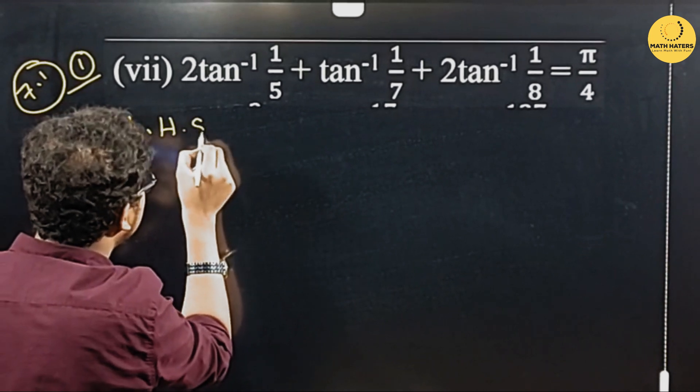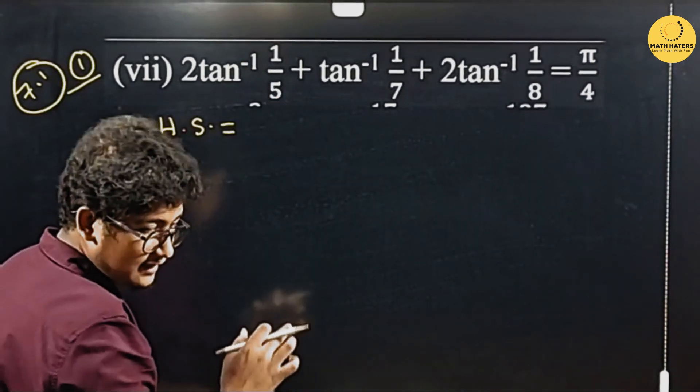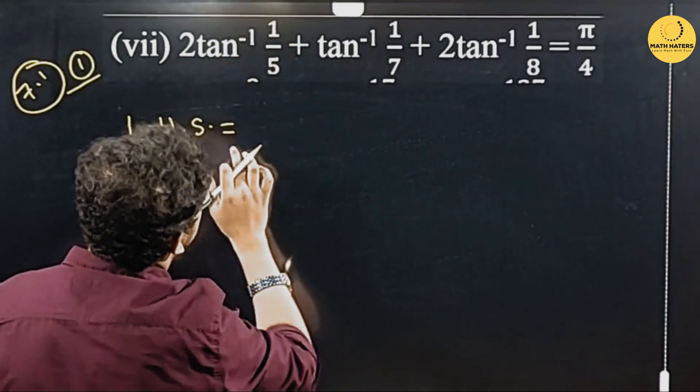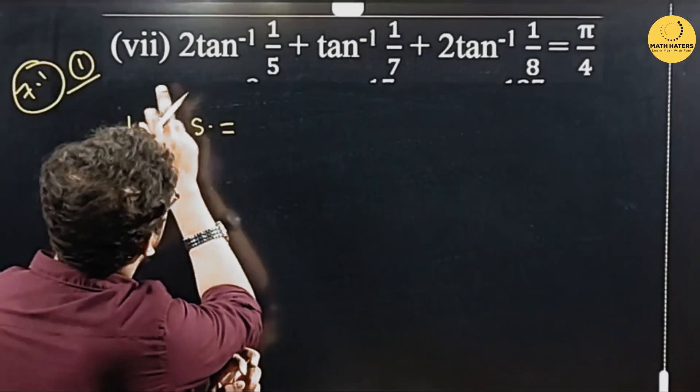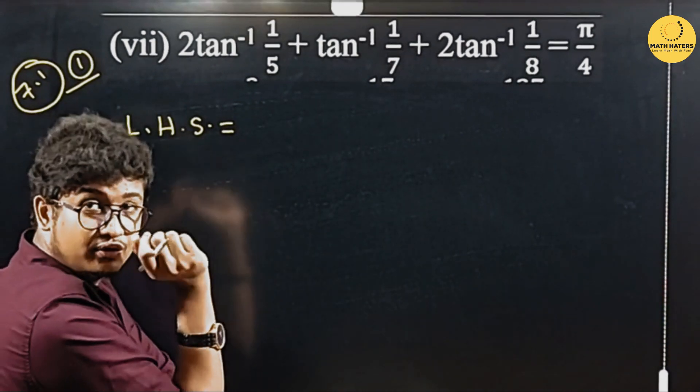Left hand side, you will start the calculation. This calculation is 2 among 2. If you have 2 tan inverse x, you will now apply. You can see 2 common.